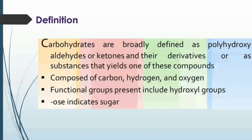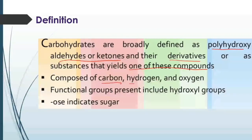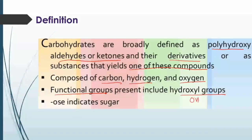Let's start with the definition of carbohydrates. Carbohydrates are broadly defined as polyhydroxy aldehydes or ketones and their derivatives, or substances that yield one of these compounds. They are composed of three atoms — carbon, hydrogen, and oxygen — and contain a functional group called the hydroxyl group (OH). Any term ending in '-ose' such as glucose, fructose, or galactose indicates a sugar compound.